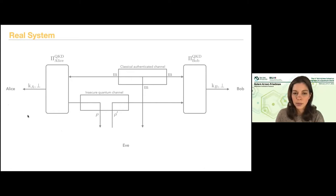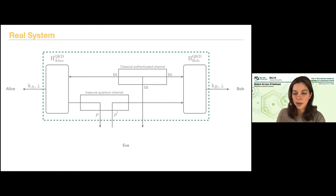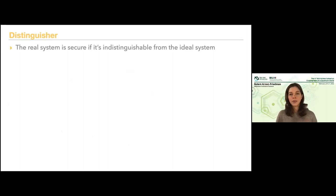This is the real system and how we produce it from the resources we have in combination with the protocol we want to analyze. Informally, thinking about a distinguisher: the real system is secure if it's indistinguishable from the ideal system. If these two systems look the same, then we are happy.